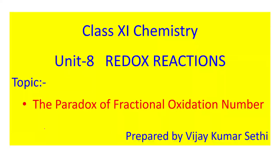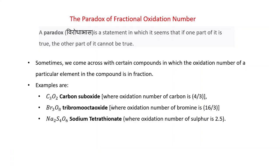Class 11th chemistry, unit 8: redox reactions. In this video we will discuss the paradox of fractional oxidation number. First of all, what is the meaning of this paradox? In Hindi it is known as 'virudha vas'. A paradox is a statement in which it seems that if one part of it is true, the other part cannot be true. So how can we apply this paradox to oxidation number?